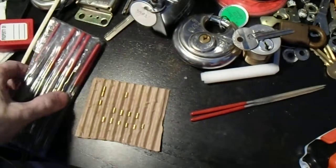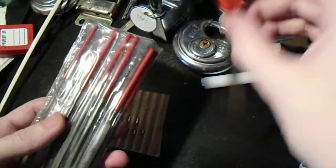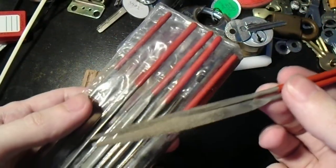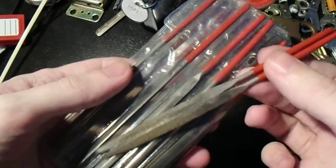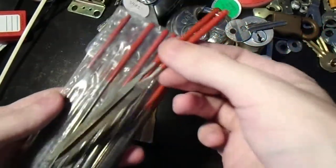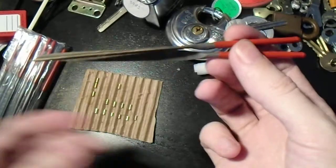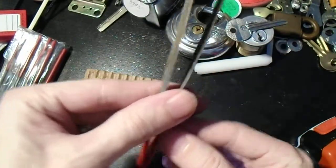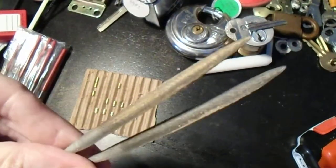So what we're going to do is put these down and we're going to get out some files like you can get at a hobby store or a craft store or even a decent hardware store. For this, I'm going to use these two half-round files.